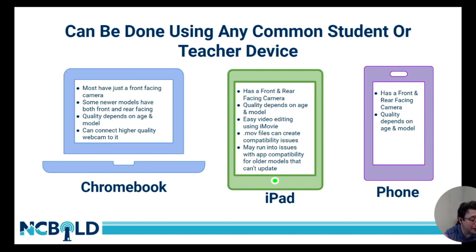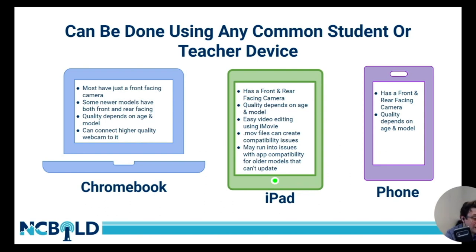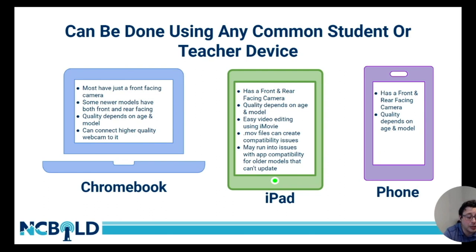Another great option is the traditional standard cell phone. A lot of the new cell phones have great cameras that can capture video in high-def. A lot of students, especially middle grades and up, do have these. You always want to have devices available for students who don't have their own personal device due to equity concerns. Cell phones have both front- and rear-facing cameras, quality can depend on the age and model, but they're great for students to record on — and they can even do it outside of school at home.